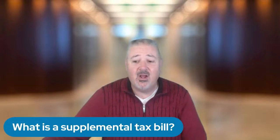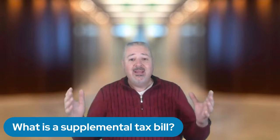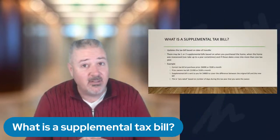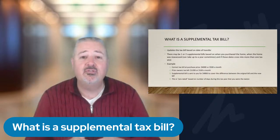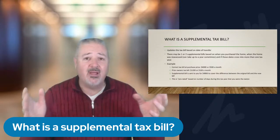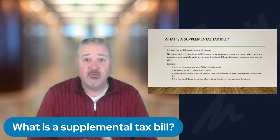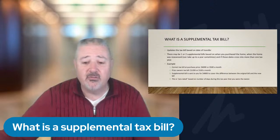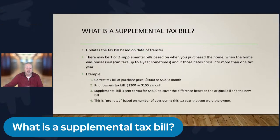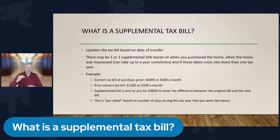This is probably the most confusing thing that happens: the supplemental tax bill. Everybody who buys a home gets a supplemental tax bill and nobody understands how it works. It updates the tax bill based on the date of transfer. We all know Prop 13 says taxes can only go up 2% per year unless there is new construction or a change in ownership. The counties don't have enough staff to be on top of the change in ownership right away, and the change in ownership almost never coincides with the date the tax bill was created.